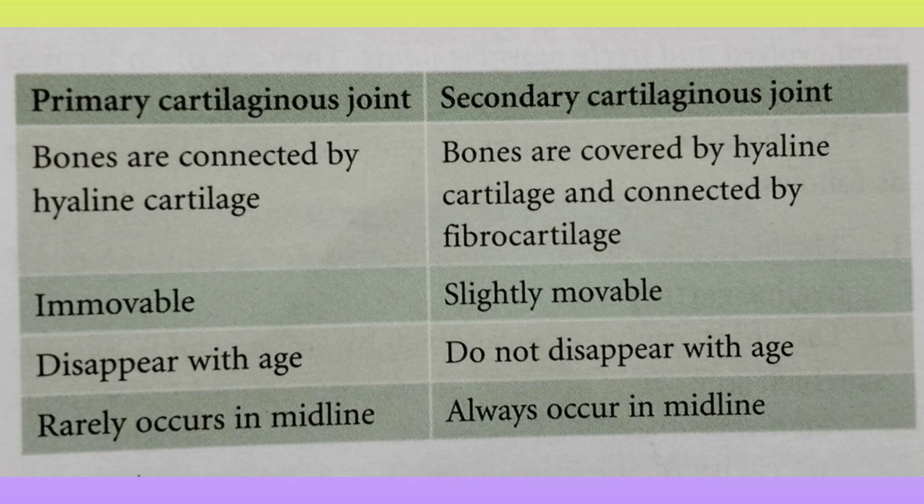Primary joints rarely occur in the midline; secondary always occur in the midline. Joint classification: functional classification and structural classification — fibrous, cartilaginous, and synovial. The synovial joint is very important, worth 20 marks. We will see the synovial joint in part 2. If you find this video helpful, please share it with your medical friends and comment below. Thank you.